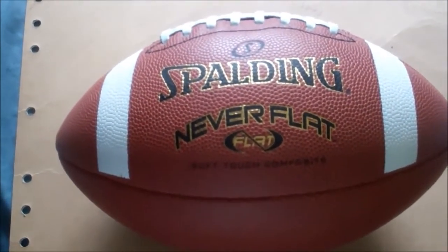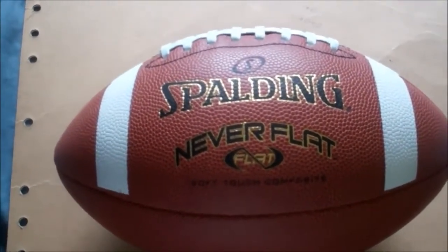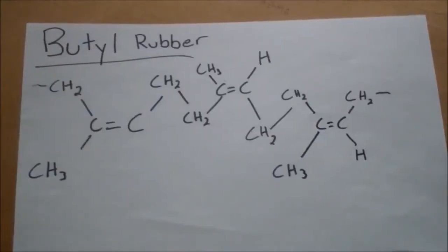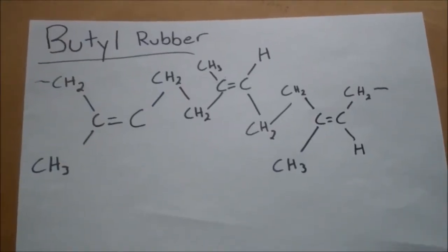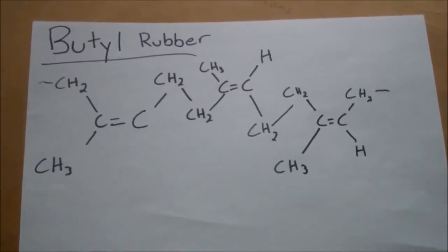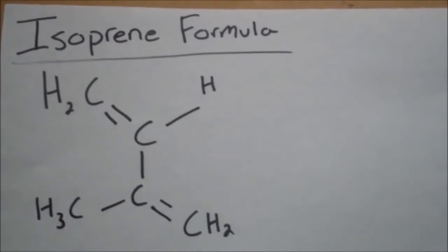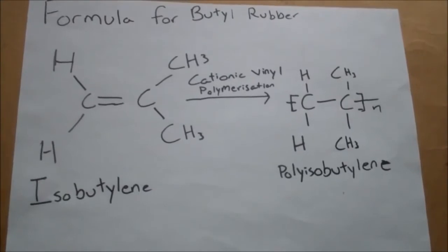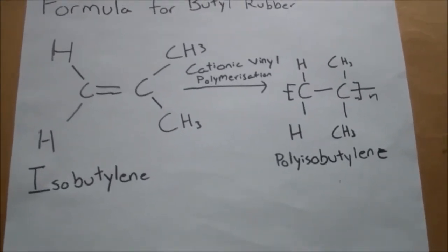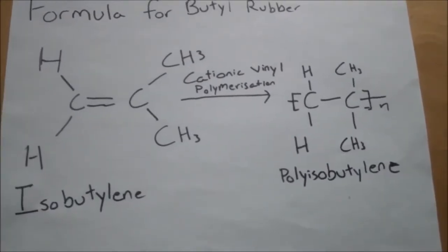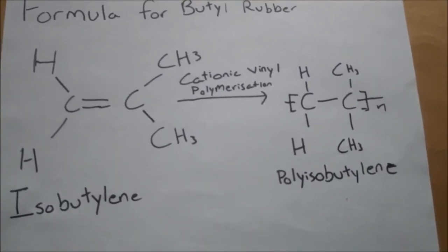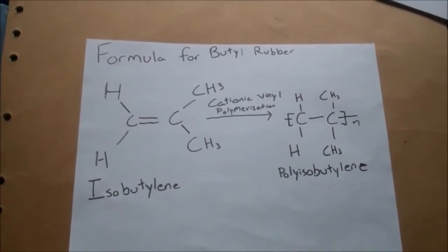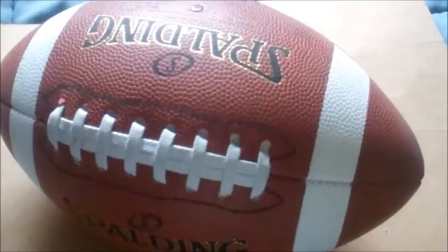To start off, let's begin with the air bladder, which is the inside of the football, and it's made of a rubber material. The bladder inside is made of butyl rubber. Butyl rubber is a synthetic rubber made of 98% polyisobutylene and 2% isoprene. It's made by cationic addition polymerization, where the cation changes charges on a monomer and it becomes reactive, which eventually forms a polymer. Butyl rubber is also impermeable to air, which comes in handy when making the air bladder for a football.